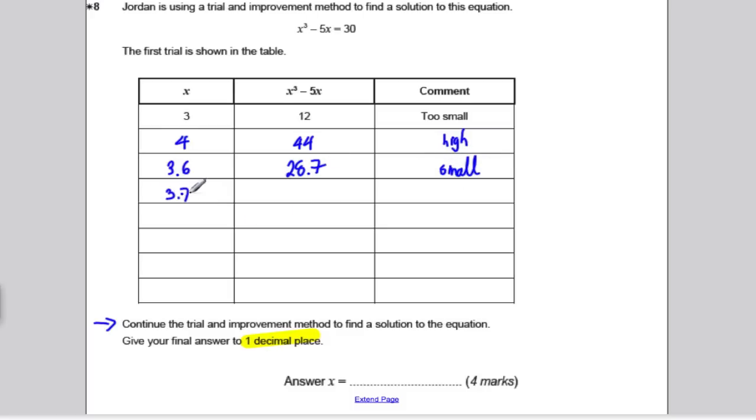So, let's try 3.7 now. So, we do 3.7 cubed minus 5 times 3.7. And this time, we're going to get about 32.2, which is high. And we found two consecutive one-decimal place numbers, one's too small, one's too high, which is excellent. That's what we want. Now, we try a number to two decimal places that's in between the two, 3.65. On our calculator, 3.65 cubed minus 5 times 3.65. And we get 30.4, which is slightly high.